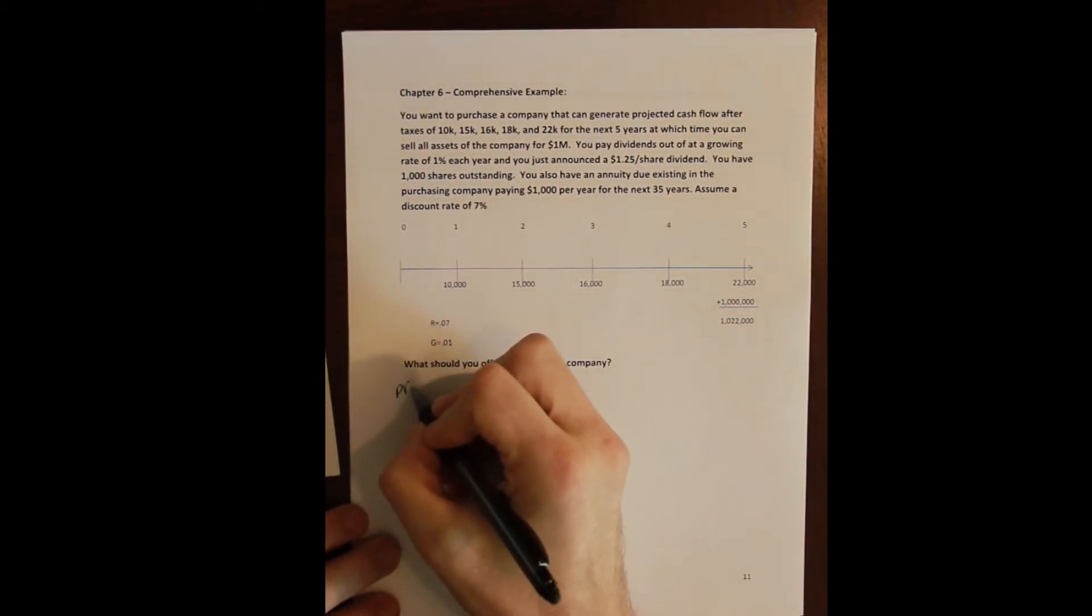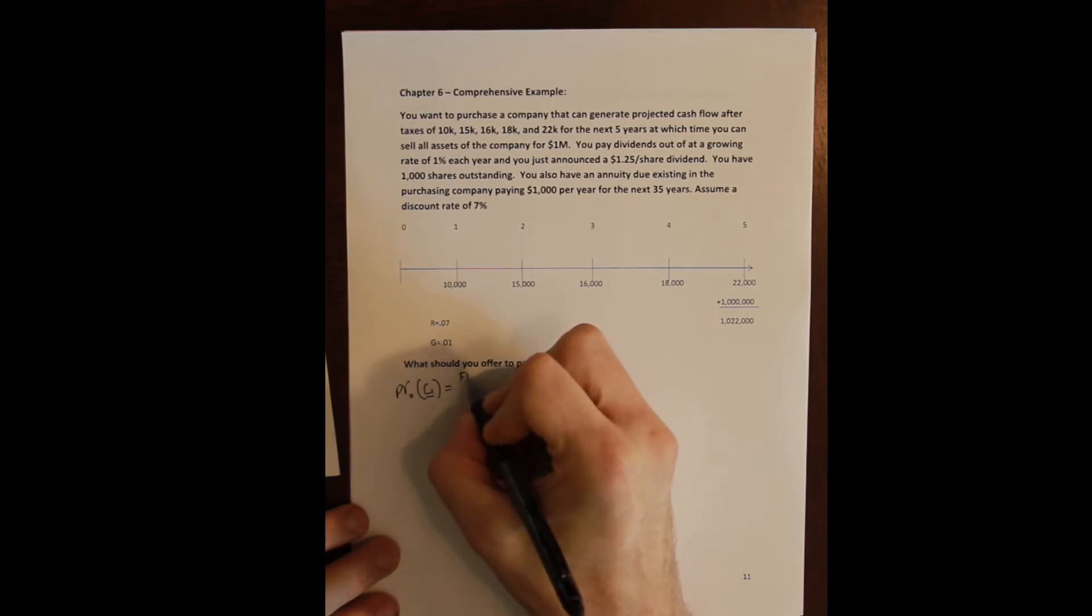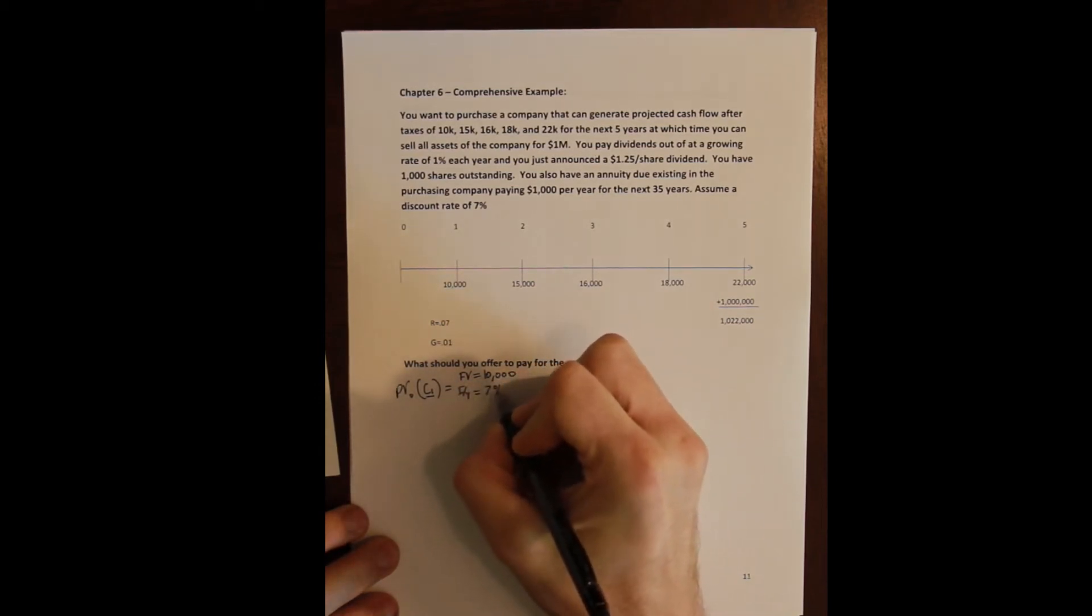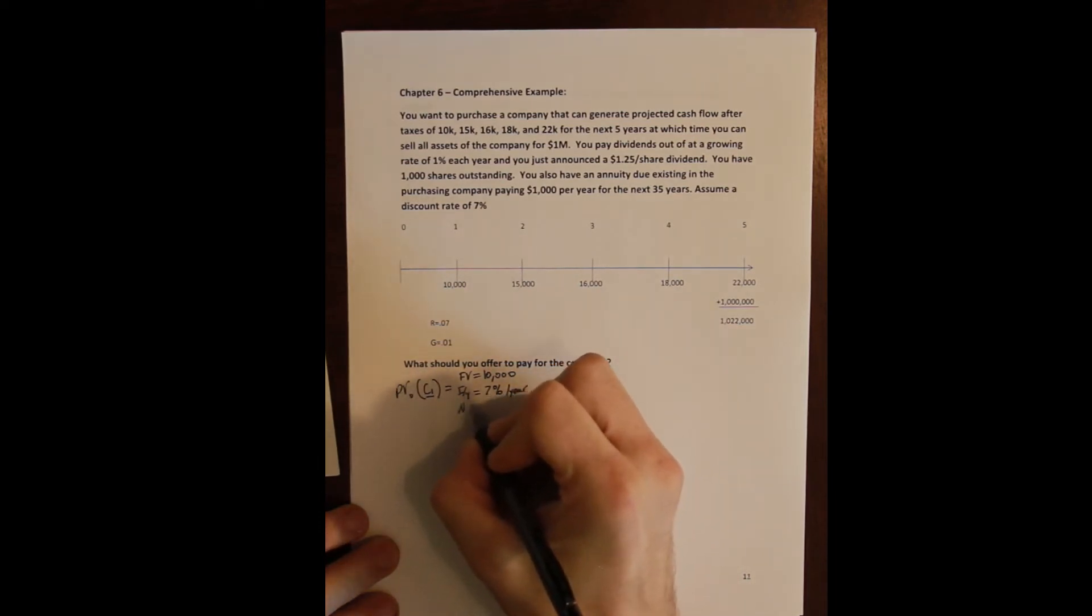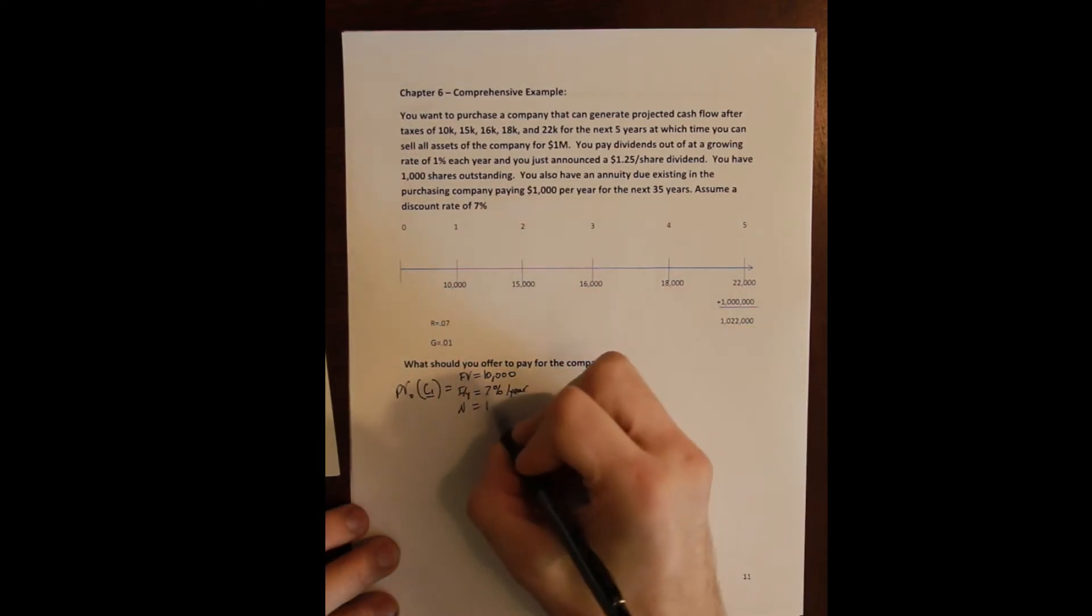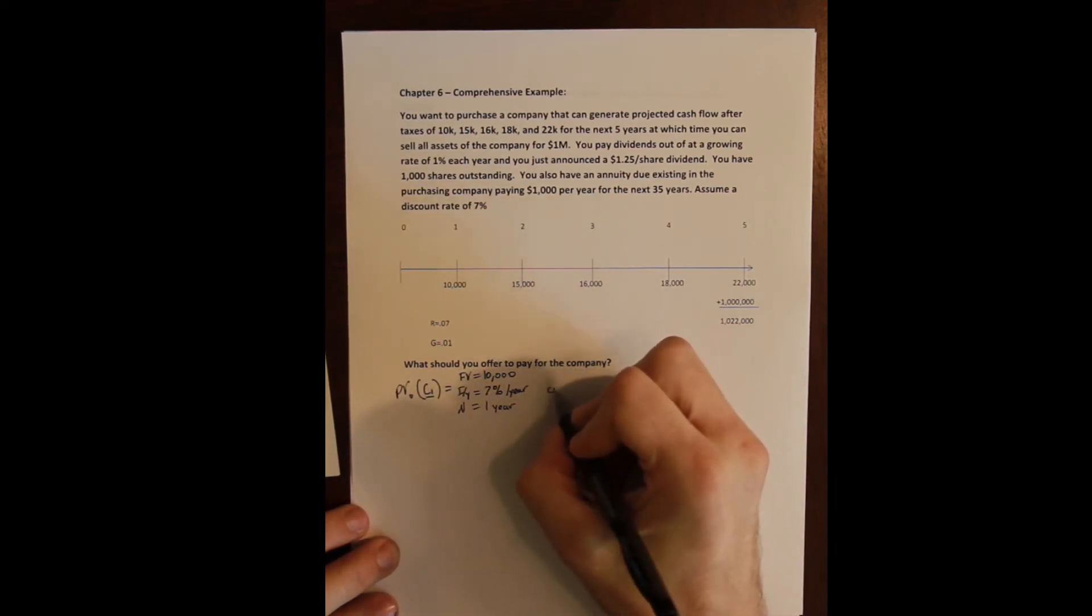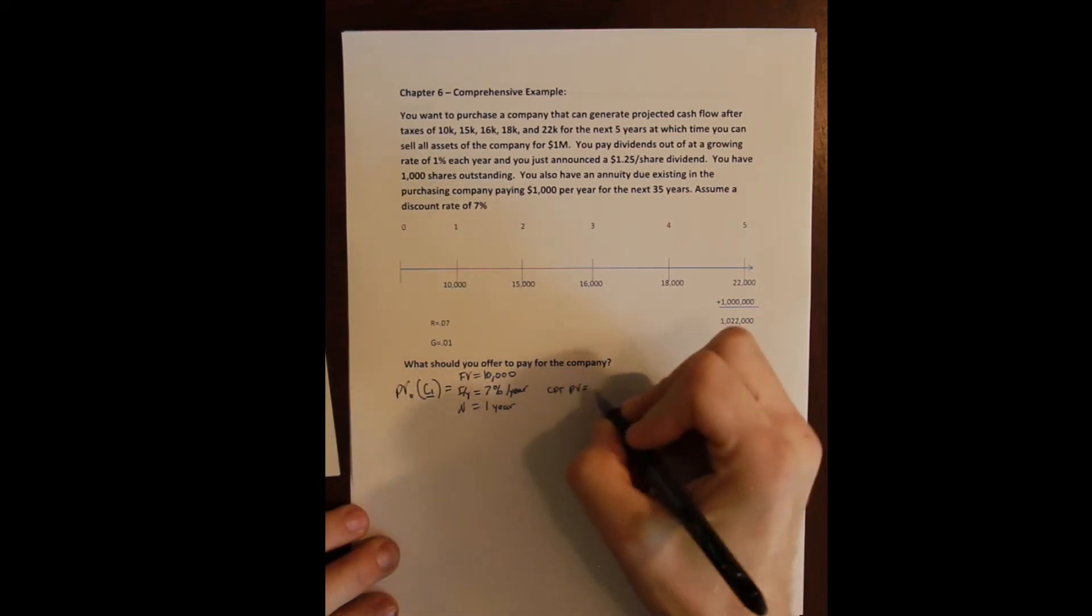So that's what we'll do. We'll take the present value of each cash flow. So we'll start with the present value today of, and I'll write cash flow one, and that cash flow has a future value of $10,000. It has a discount rate, so the rate is 7% per year, and it occurs one year in the future. So our N is one, and we compute the present value of that cash flow, and we get $9,345.79.